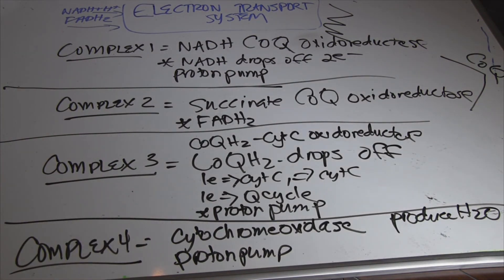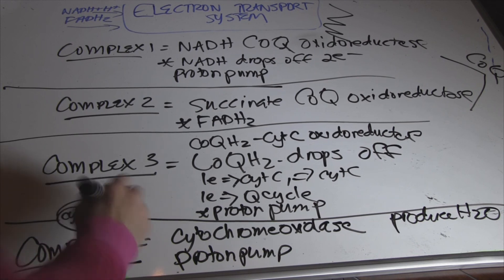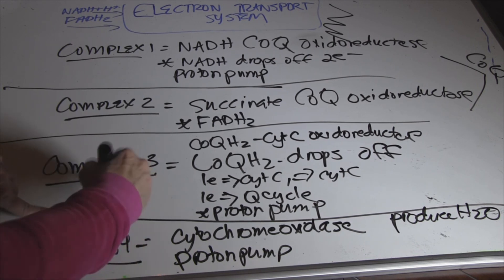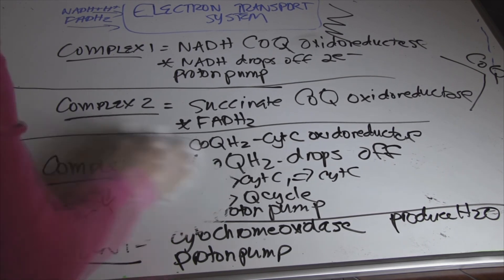So those are our four complexes of the electron transport chain. Another one I should mention is that we had a mobile carrier here, too, that went from complex 3 to 4, and that is cytochrome C. Again, this one's associated more closely with the matrix. Alright, that's it. Let's move on to the next step.